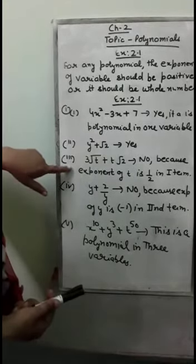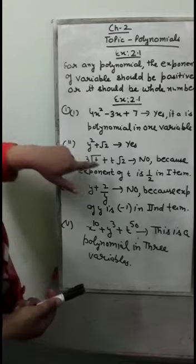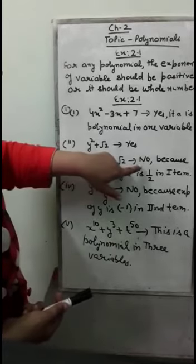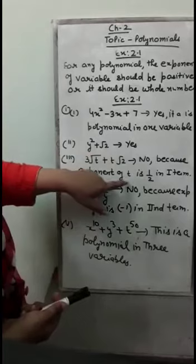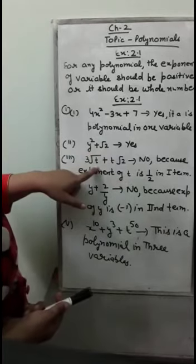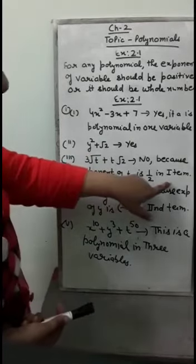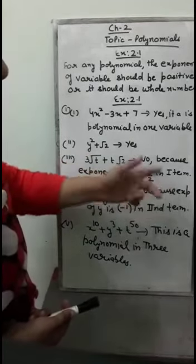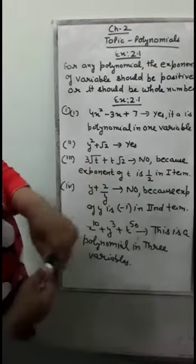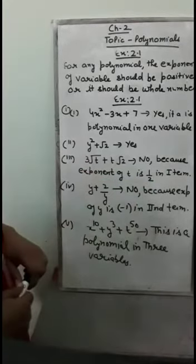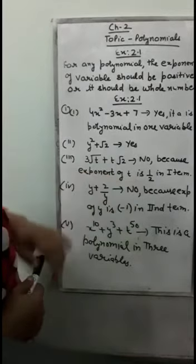The problem lies in the third part. The statement is 3 root t plus t root 2. This is no, because the exponent of t in the first term is a square root, which means 1 by 2 — a rational power. There should be no rational power in a polynomial; if there is a rational power, it will not be a polynomial.